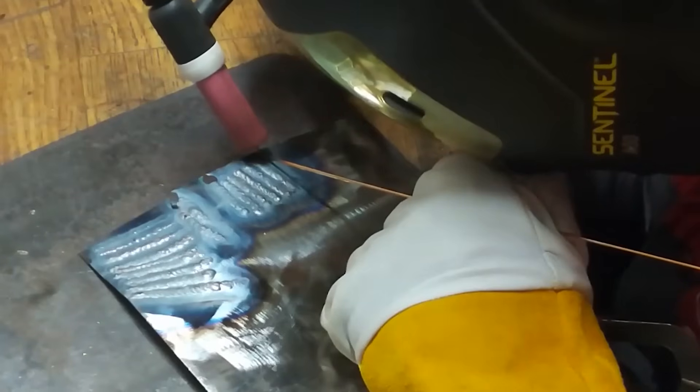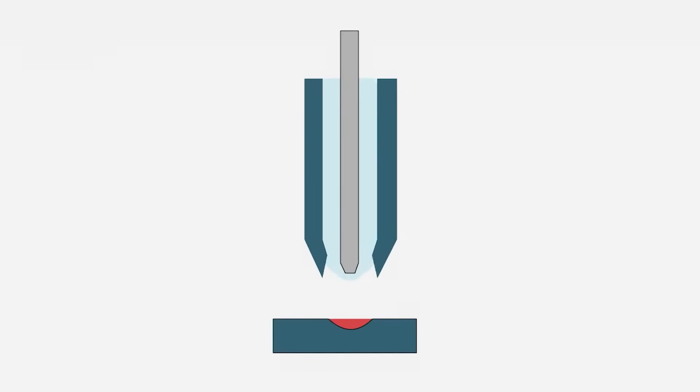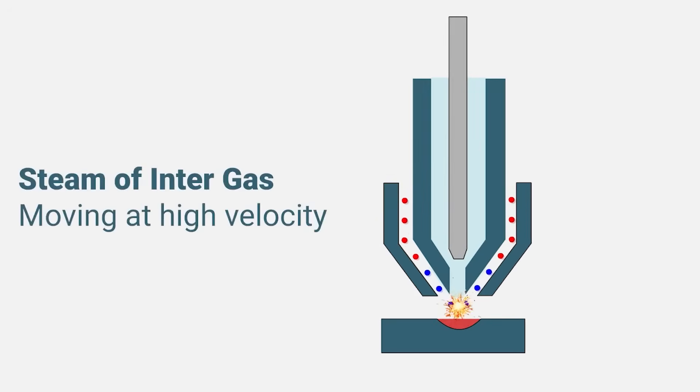Plasma Arc Welding (PAW), similar to tungsten inert gas welding, uses an electric arc between a non-consumable electrode and an anode, which are placed within the body of the torch. The electric arc ionizes the gas in the torch and creates the plasma, which is then pushed through a fine borehole in the anode to reach the base plate. In this way, the plasma is separated from the shielding gas.